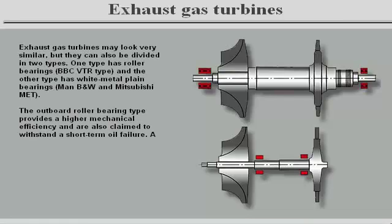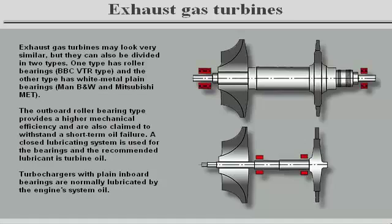Exhaust gas turbines may look fairly similar, but they can be divided into two types. One type has roller bearings and the other has white metal plain bearings. The roller bearing type provides higher mechanical efficiency and is claimed to withstand a short term of oil failure. A closed lubricating system is used for the bearings, and the recommended lubricant is turbine oil. Turbochargers with plain inboard bearings are normally lubricated by the engine's system oil.